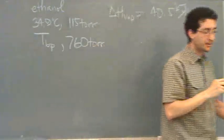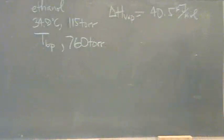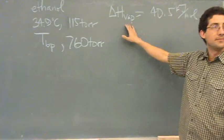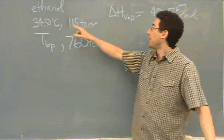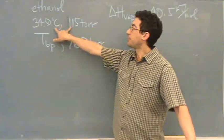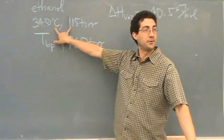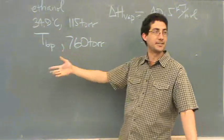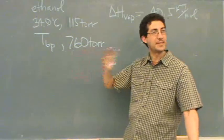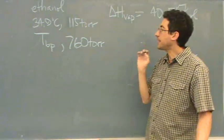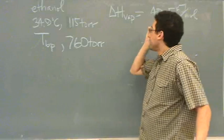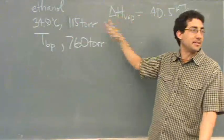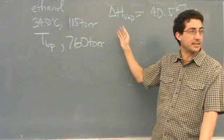Now hopefully at this point you're starting to get a bigger clue of what to do. We have a delta H of vaporization, we have a pressure-temperature point, and another point where one's unknown. It has to be Clausius-Clapeyron. Does that make sense? The big hint is just having two of these and the delta H — there's nothing else that could be mixing those things together.